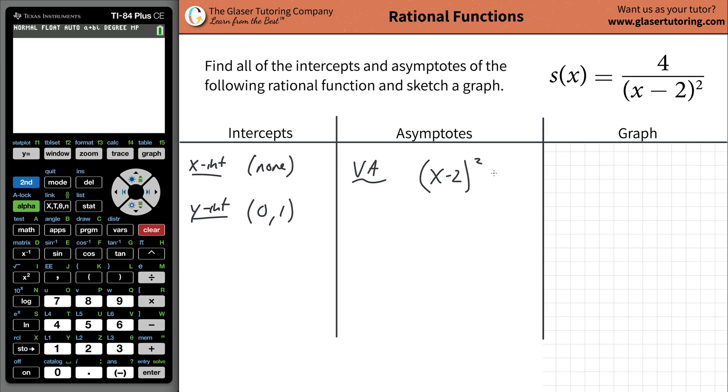After you cancel anything that's appropriate, what you do is take that denominator, x minus 2, and set it equal to 0. And you're going to solve this for x. We can take the square root of both sides, so that's x minus 2 equals 0. Solving this for x, add 2 to both sides, and x equals 2. That is the equation of your vertical asymptote.